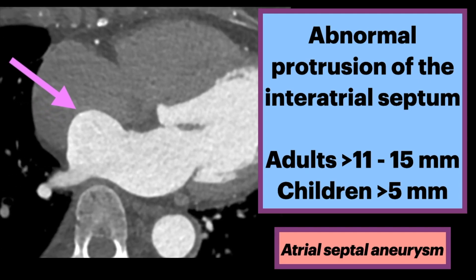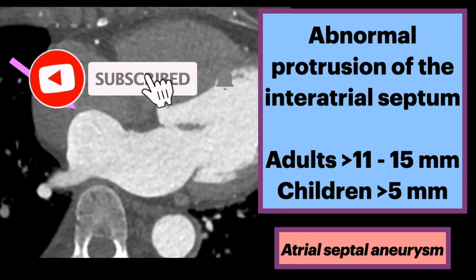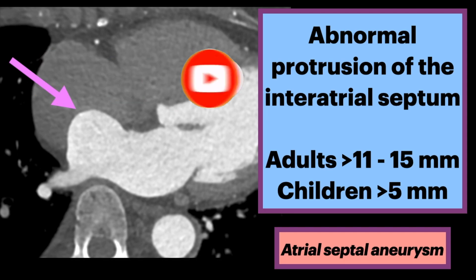There are varying definitions in the literature of the exact length of the protrusion. The range is from greater than 11 to greater than 15 millimeters beyond normal excursion in adults, and greater than 5 millimeters in children. The entire interatrial septum can be involved, or it can be limited to the fossa ovalis.